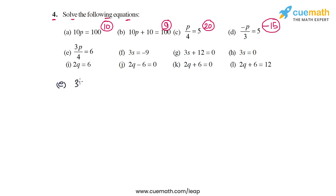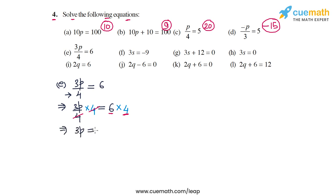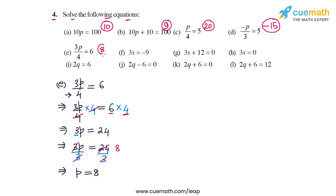In part e the equation is 3p by 4 equal to 6. First we multiply by 4 on both sides to get rid of the 4 in the denominator. The 4s cancel out on the LHS and 6 into 4 is 24, so we get 3p equal to 24. We then divide by 3 on both sides: the 3s cancel out and 24 by 3 is 8, giving us p equal to 8. The solution in part e is p equal to 8.